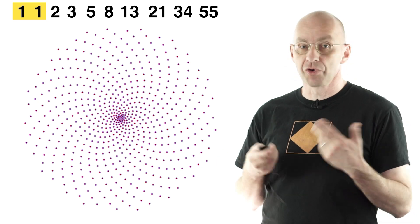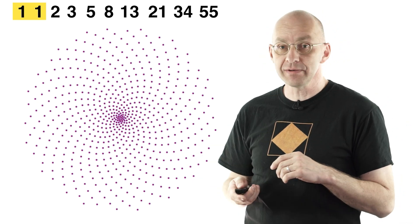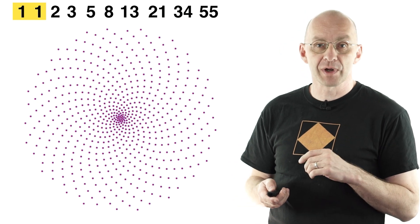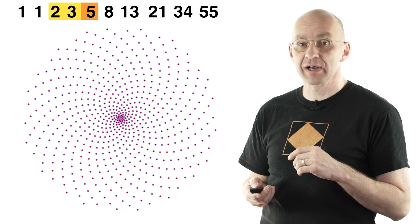Now plants like this grow so does the Fibonacci sequence. Starting with the two seeds 1 and 1 we grow them like this. 1 plus 1 is 2, 1 plus 2 is 3, 2 plus 3 is 5, 3 plus 5 is 8 and so on.